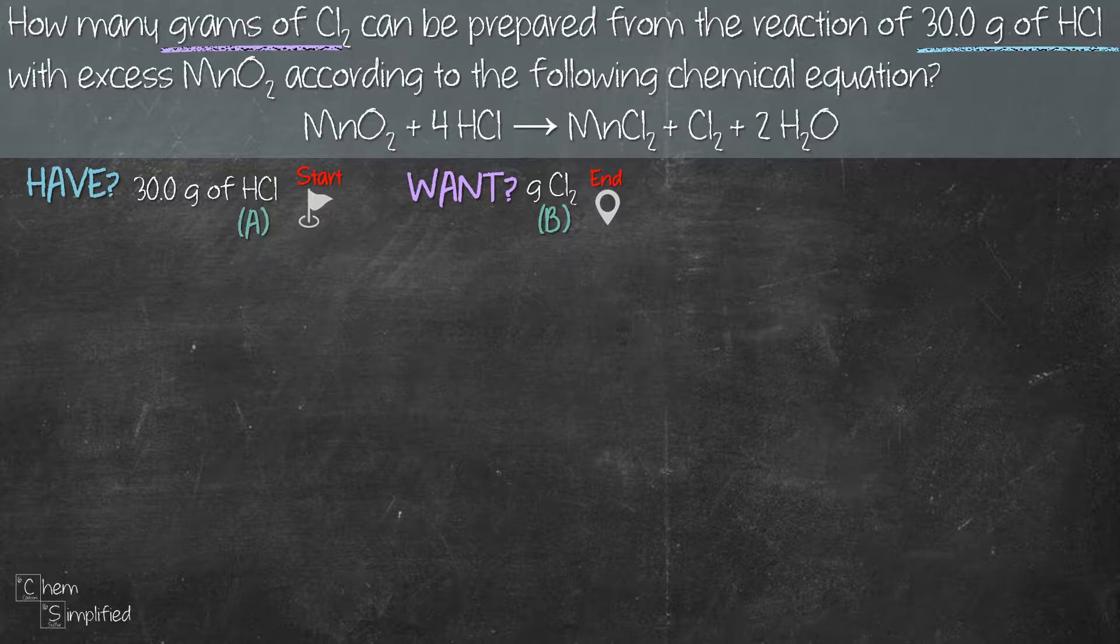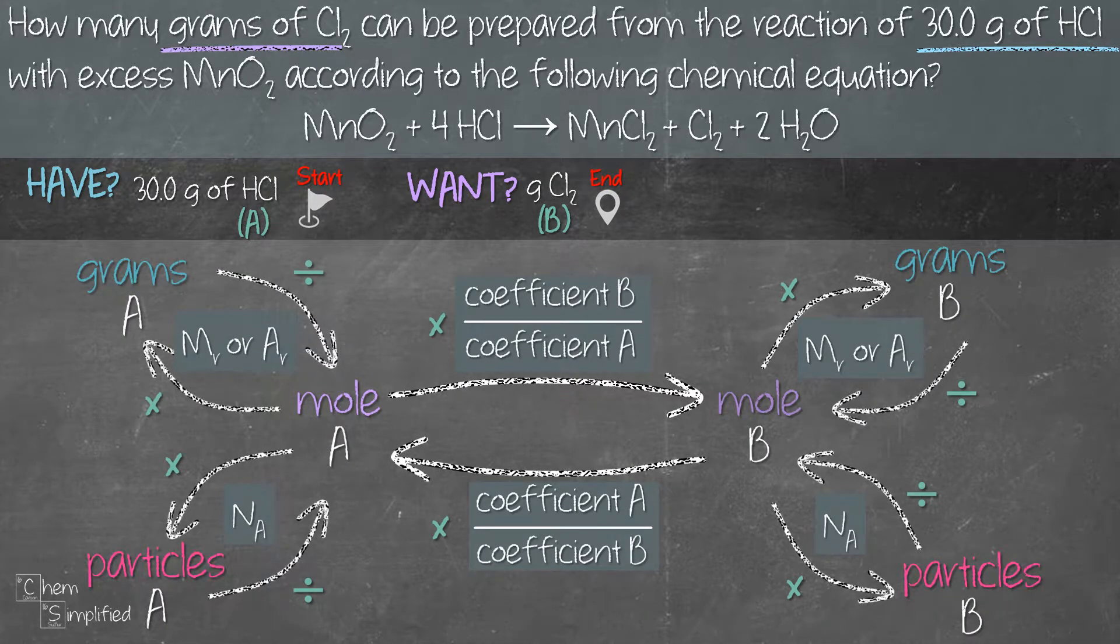Next, we're going to tag our start and end point on our stoichiometry plan. I've posted videos in the Stoichiometry 101 series. Do check it out if you haven't seen it. I go through in detail on how the plan is developed and how to use it to solve stoichiometry problems. So based on the question, our start point is grams A and our end point is grams B.